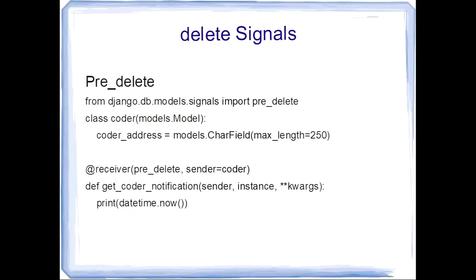Similarly, the next signal is delete. Delete signal has pre-delete and post-delete. Before and after each instance is removed, this signal is sent. For pre-delete, before the instance is removed, this signal is sent. The syntax is, we import the signal and call the method pre_delete. Here is the model coder having one attribute coder_address which is a character field with max_length 250, and having one function get_coder_notification.